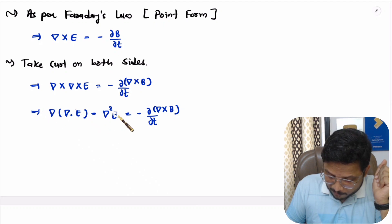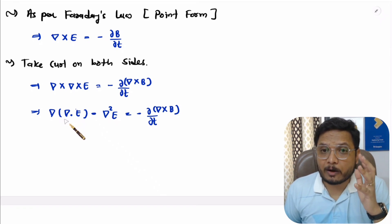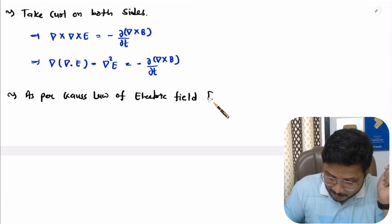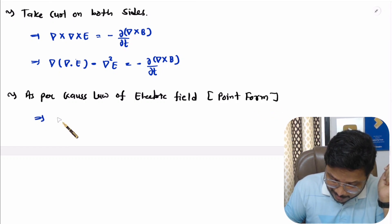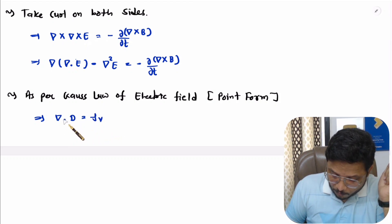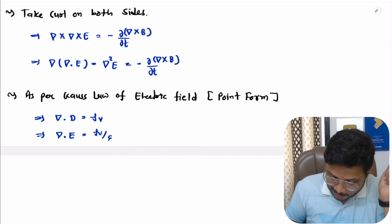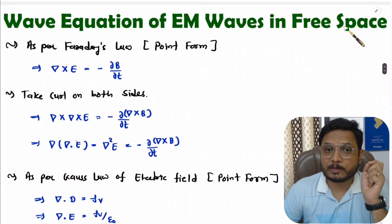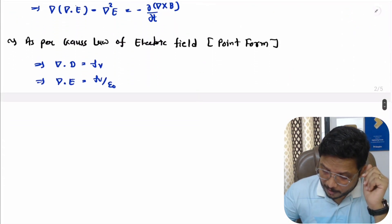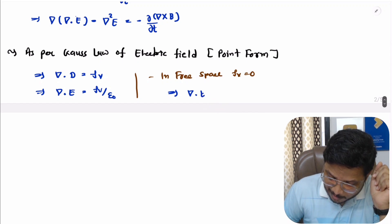Now if you observe this term carefully, we have del dot E, and del dot E we have from Gauss's law of electric field. Taking Gauss's law of electric field in point form, it states del dot D equals rho V, and in terms of electric field, del dot E equals rho V by epsilon naught. Since we are talking about EM waves in free space, volume charge is zero. Therefore del dot E equals zero. Let us call this equation one and the free-space condition equation two.